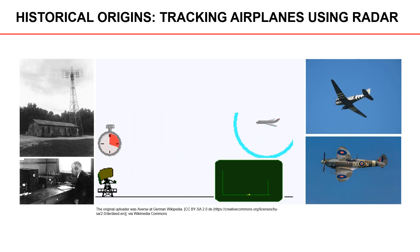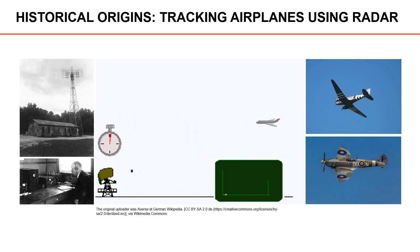we can figure out the distance or range from the sensor to the airplane. To this day, radar-based tracking of airplanes remains a common application for multiple object tracking. It is still applied for defense applications, but it is also applied in civilian settings. Private and commercial airplanes often carry a transponder that alerts others about its position. Of course, this makes it easier to keep track of the airplane. However, for redundancy and safety, radar stations are also used.